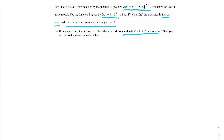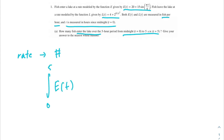Give your answer to the nearest whole number. We're being given these two equations, e(t) and l(t), and we're being asked how many fish enter the lake over the 5-hour period. Since we're going from a rate to a number, we're going to want to take an integral — specifically, the integral of e(t) from 0 to 5. That would be the integral from 0 to 5 of (20 + 15 sin(πt/6)) dt.